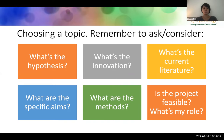In choosing a topic, consider: What's the hypothesis of your study? What's the innovation — are you looking at something entirely novel, or putting a new spin on something already published? What's the current literature? It's very important to do a literature search in PubMed. Your mentor can often point you in the right direction, or many institutions have a librarian who can help you with PubMed.